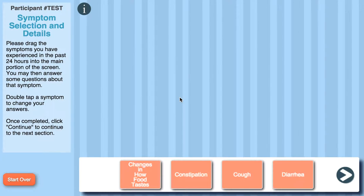Welcome to how to use C-SCAT. To begin, drag and drop any symptoms that you've been experiencing in the past 24 hours onto the symptoms stage.